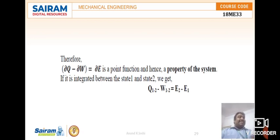Whereas Q and W are inexact differentials, we can't write Q₂ minus Q₁, so we have to write it as Q₁₋₂ and W₁₋₂ like that. Hence, energy is a property of the system.